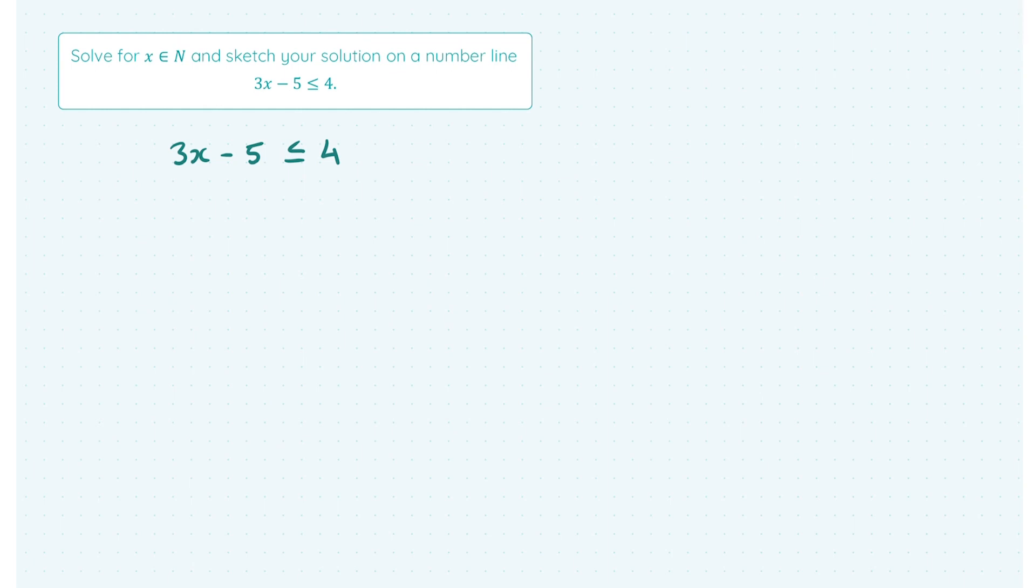So let's start solving here. We want to get x on its own on the left, so I'll add 5 to both sides, and then I'll divide both sides by 3. Here I get x ≤ 3.